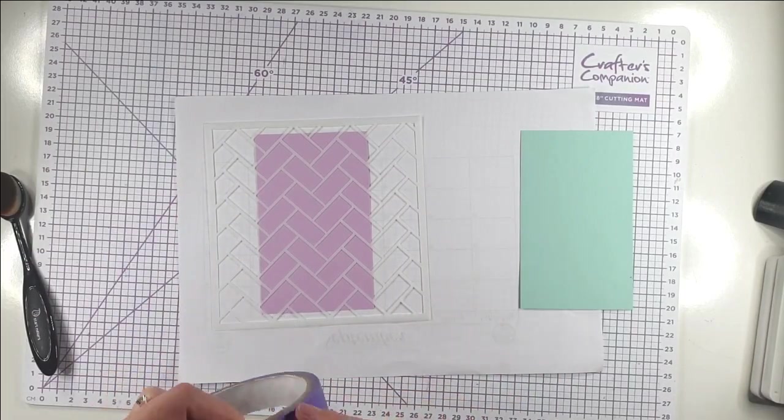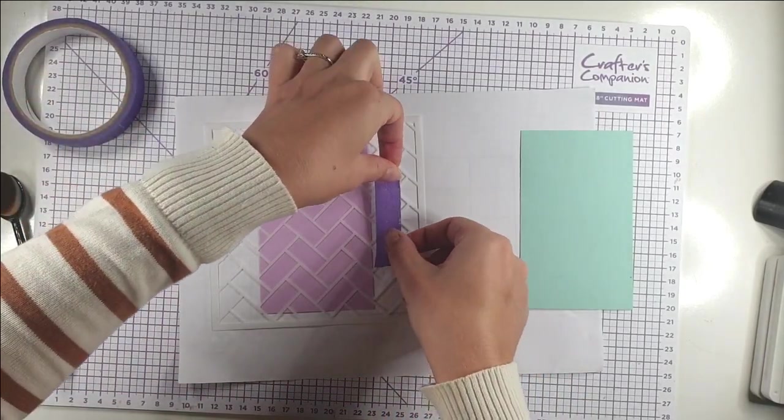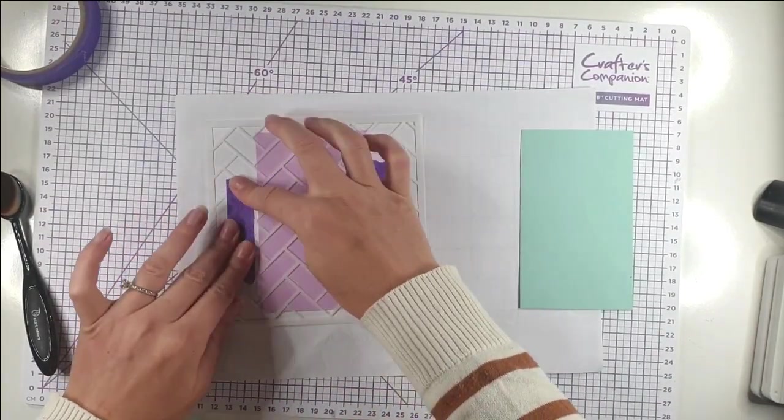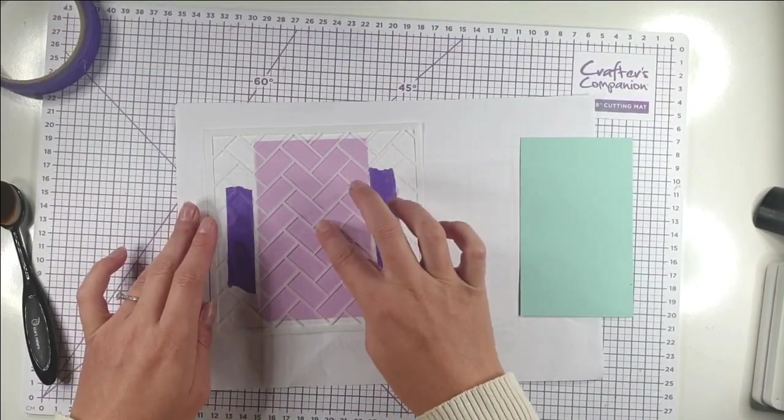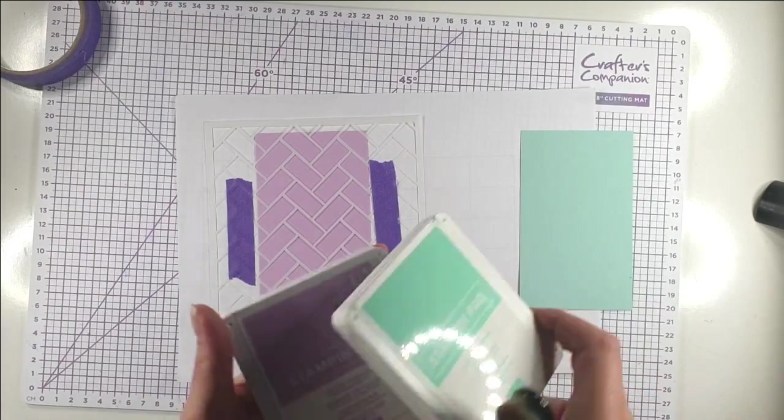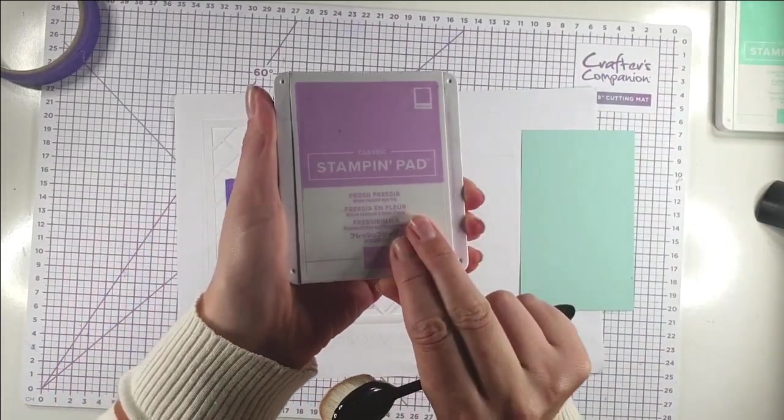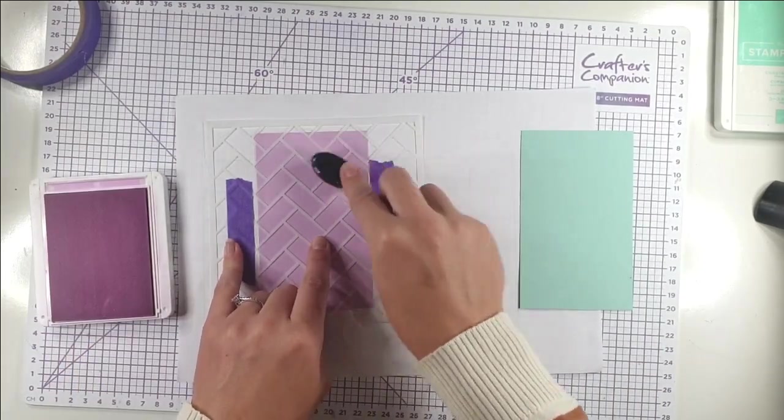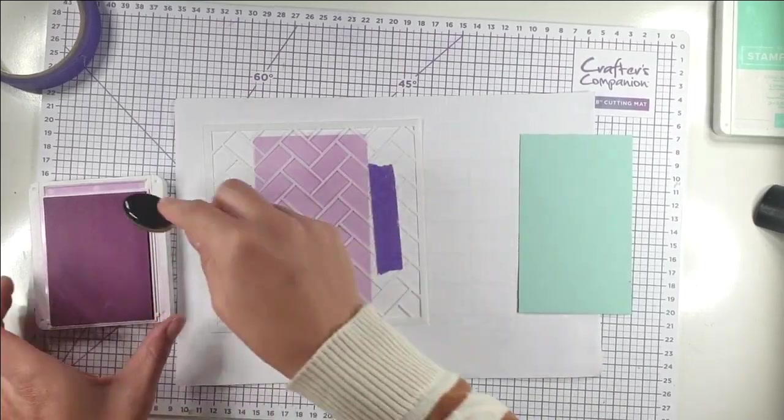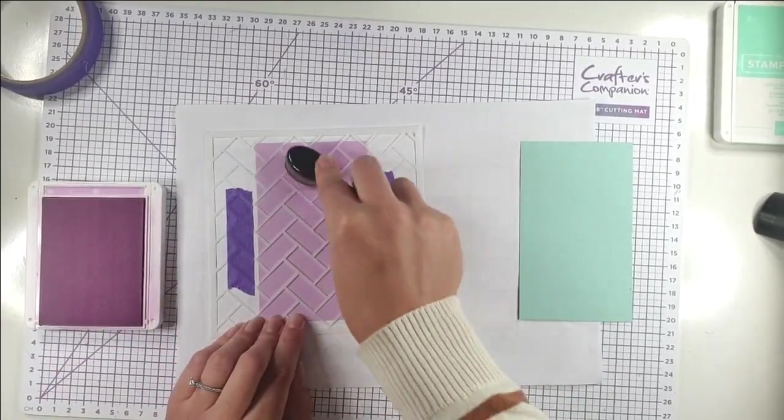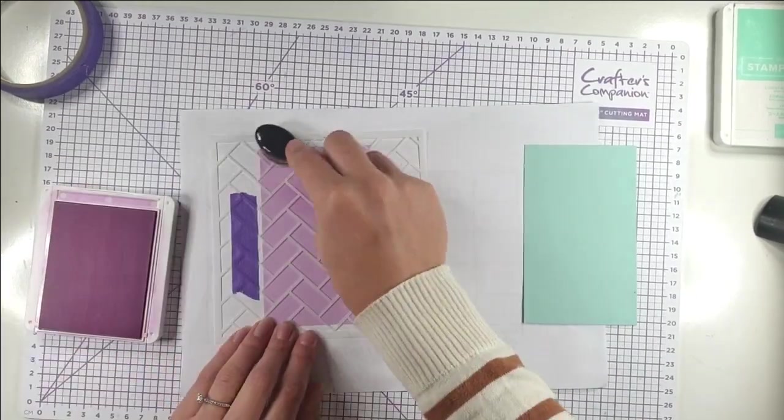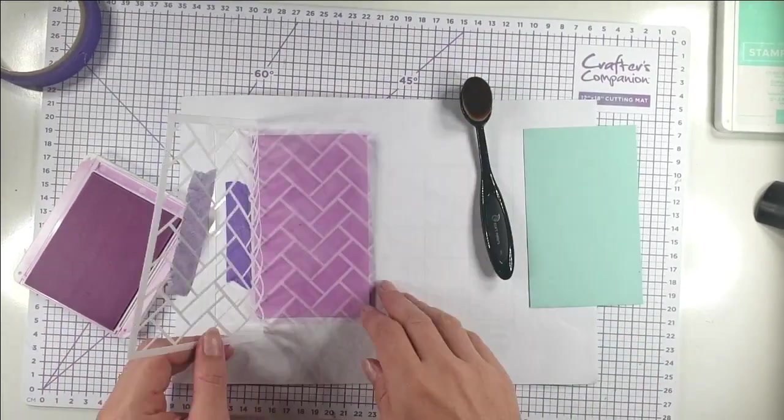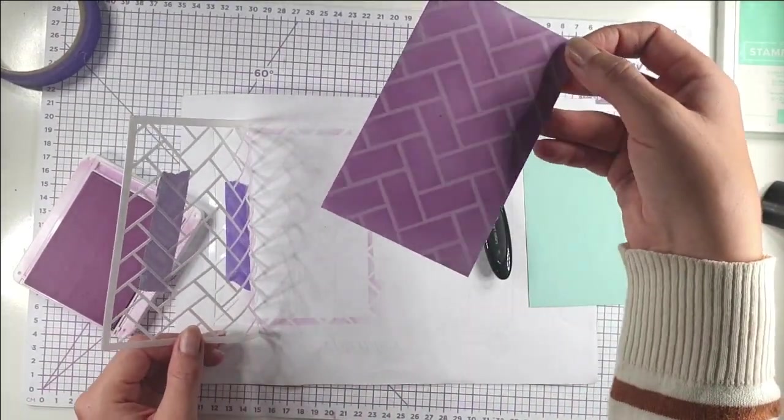I'm going to tape this down to my scrap paper reasonably close to the cardstock so it'll keep the cardstock in place as well. I don't want to put tape on the cardstock because I want to ink all over it. I've got Fresh Freesia ink for tone-on-tone. I would usually use a bigger blending brush, but all my bigger ones are in my bag ready for a class. I'm just going to use what I've got on hand.